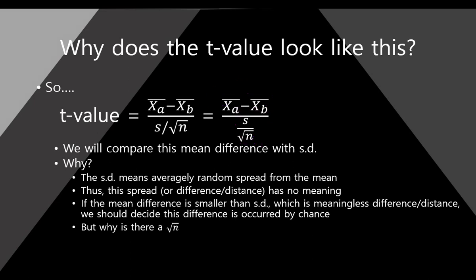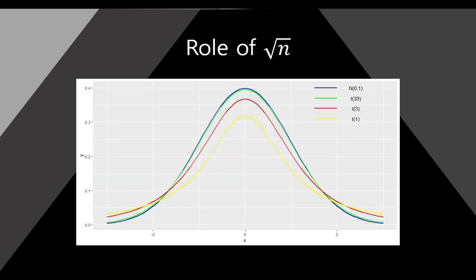But maybe you understand this process and ask: what is the root n? I made a simulation graph here. This is the role of root n. You remember what n is here? The small n means sample size — for example, how many students are in this sample: 100, 200, 300 — that is sample size. Here I show four types of graphs.